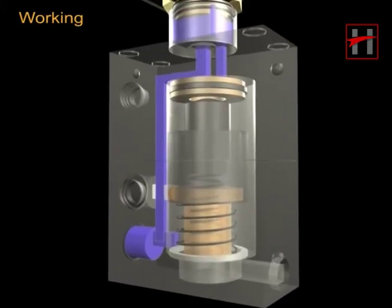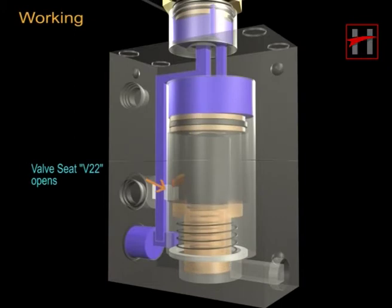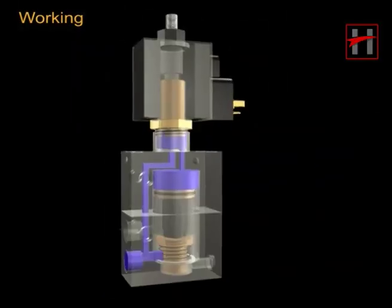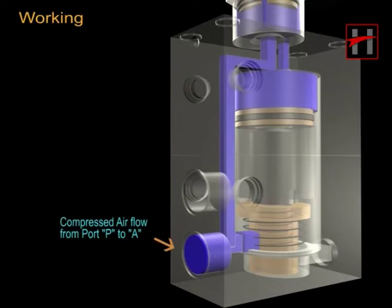Due to which the valve seat V23 is closed and valve seat V22 is opened, and compressed air flows from port P to port A.